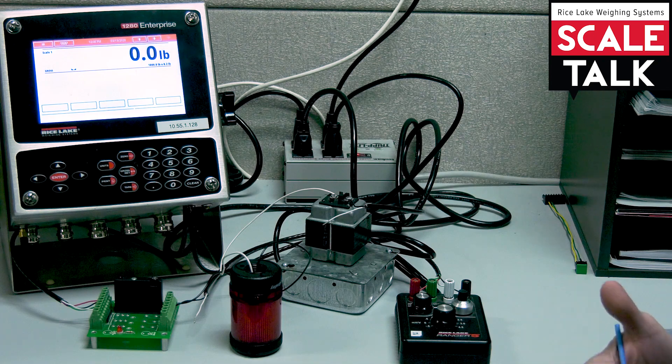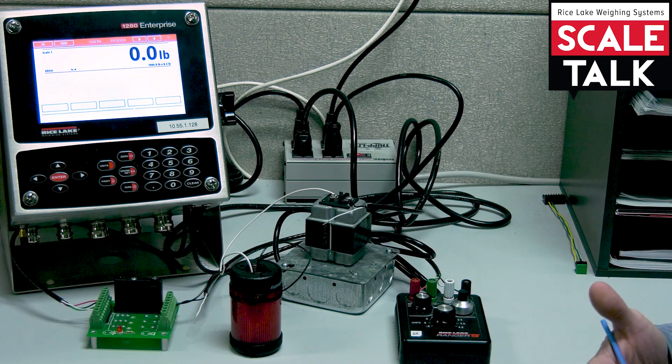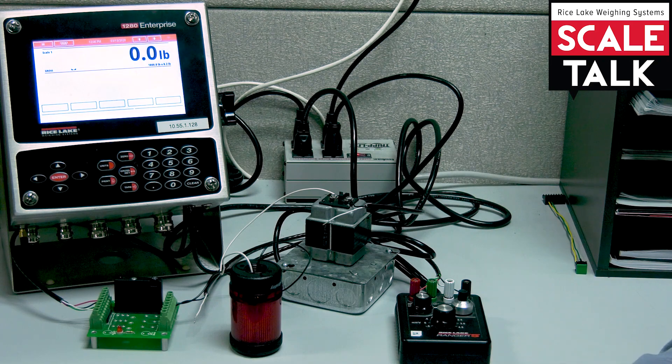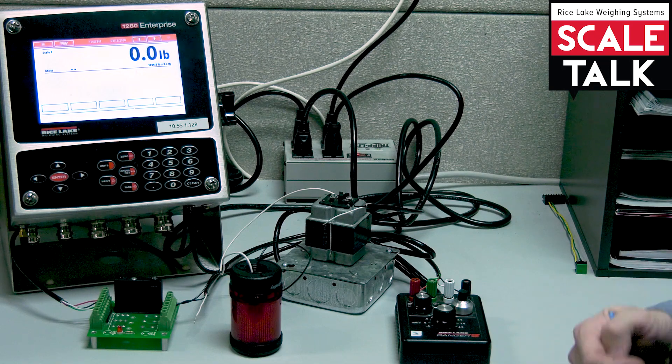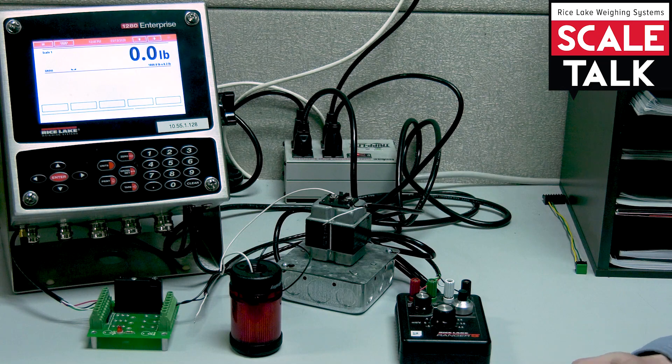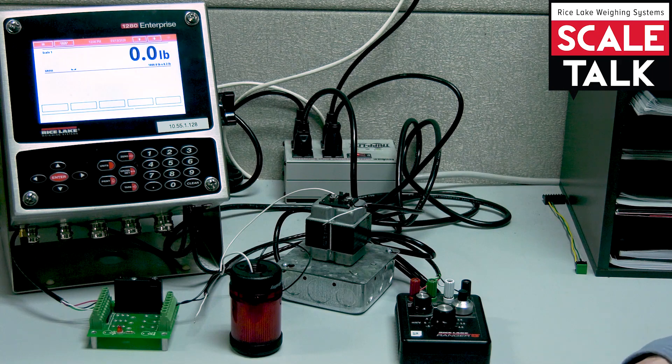Now the idea behind the free running, sometimes you'll hear this referred to as a continuous set point, is that the set point parameters are always being evaluated. There is never a point where the set point is not being looked at in terms of satisfying the criteria that's been set.